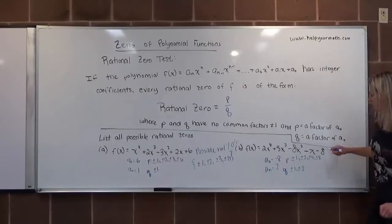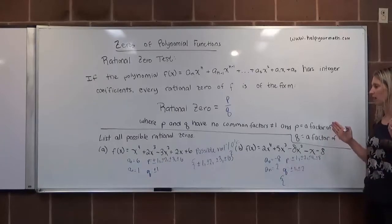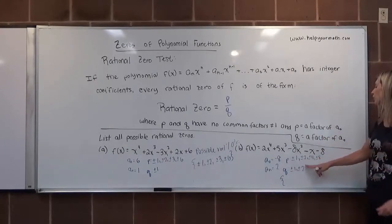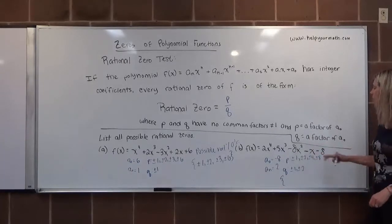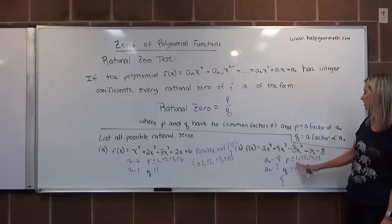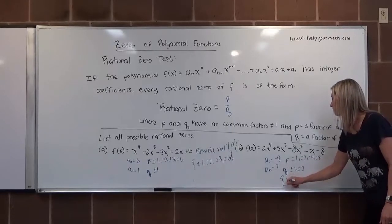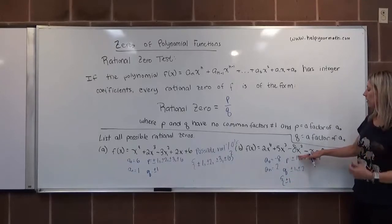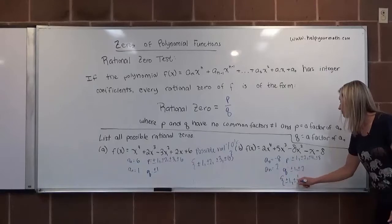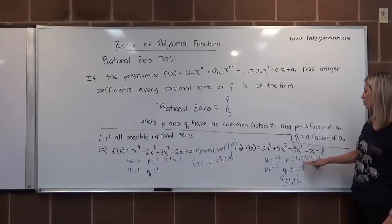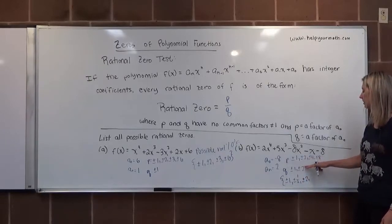So for the list I'm going to try to squish it in at the bottom. Remember we only have to look at the p's and q's that have no common factors besides 1. So we don't have to look at 2 and 2 because they have a common factor besides 1. They have a common factor of 2. We take each p and we put it as a fraction over each q. So positive or negative 1 divided by positive or negative 1 will be positive or negative 1. Then we're going to take our plus or minus 1 and divide it by plus or minus 2. So that would be 1 half. Now we're going to look at 2. So plus or minus 2 divided by plus or minus 1 will be plus or minus 2. This one we can skip.